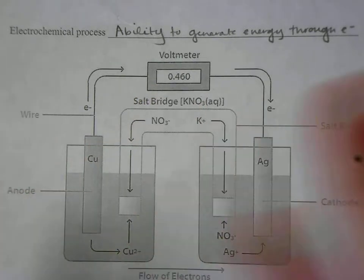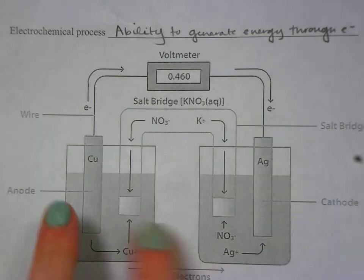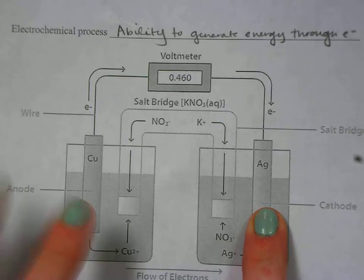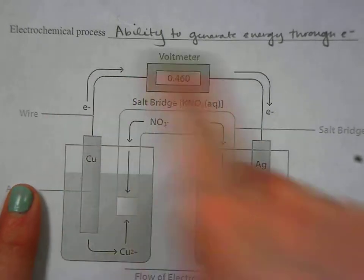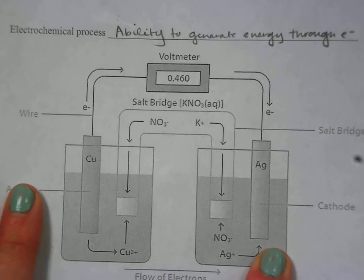You'll have this whole setup, you'll have a salt bridge, two different electrodes, you'll have it set up so you have your anode flowing, giving electrons to the cathode, and then you'll be able to figure out how much energy that cell is producing.